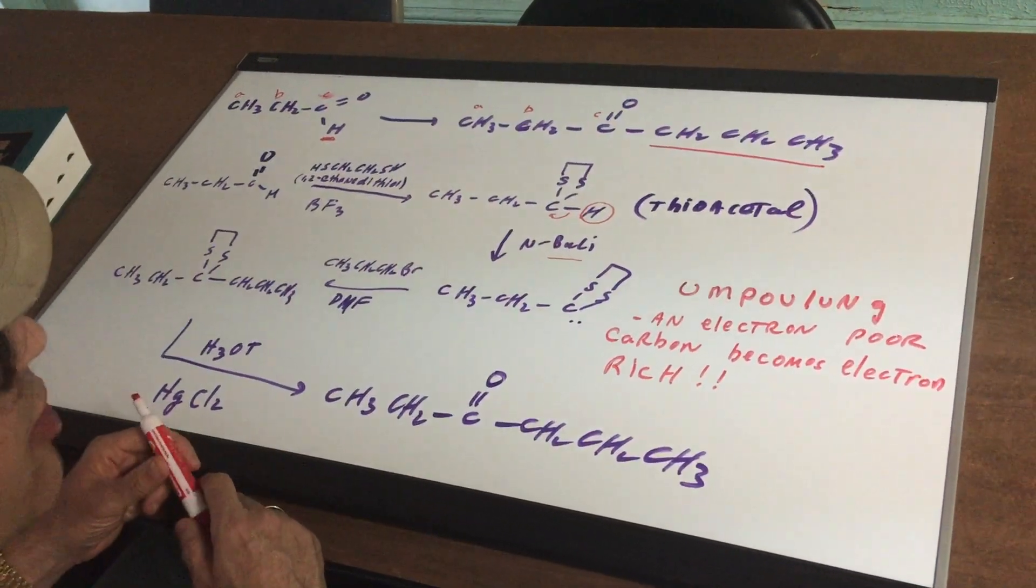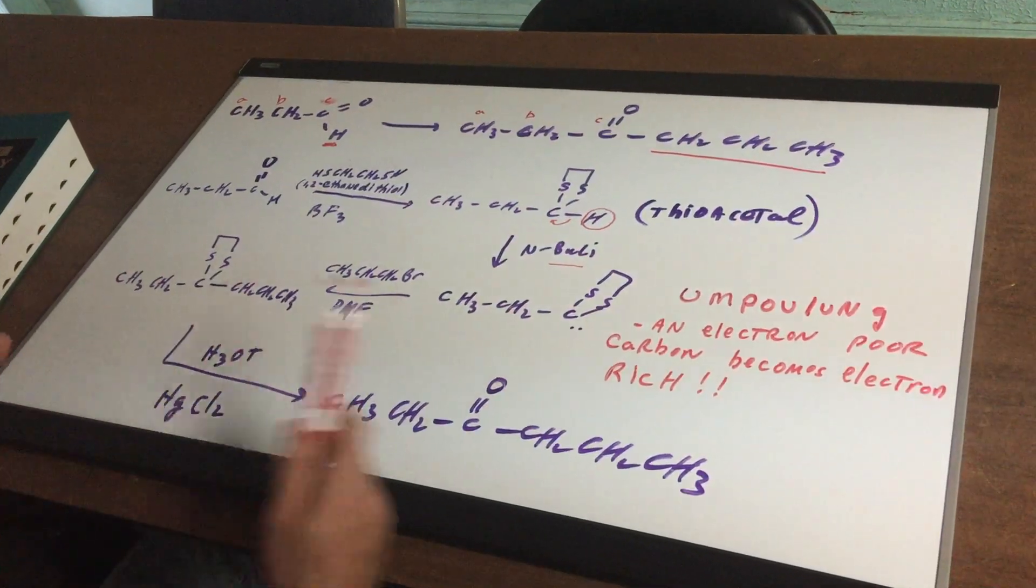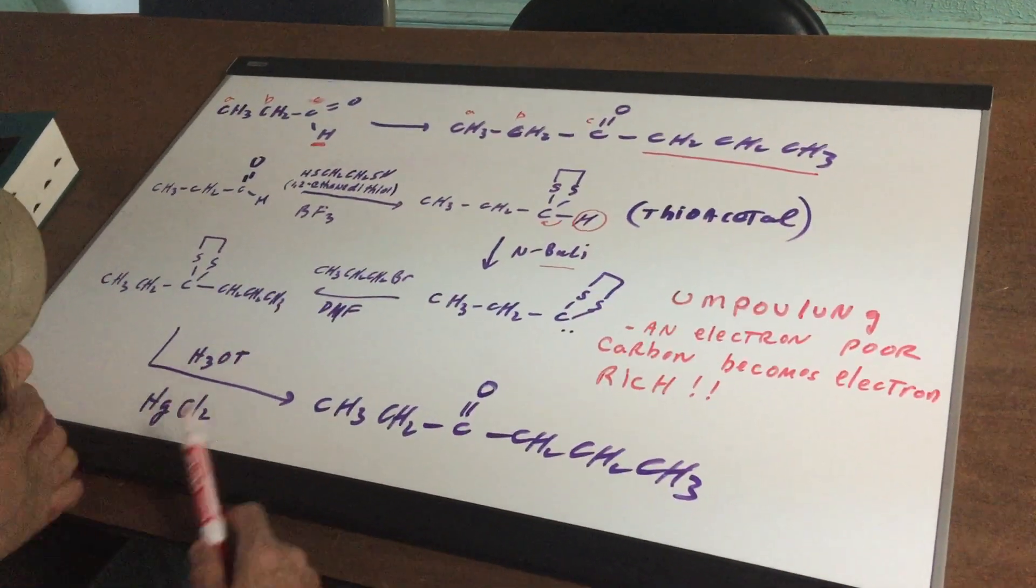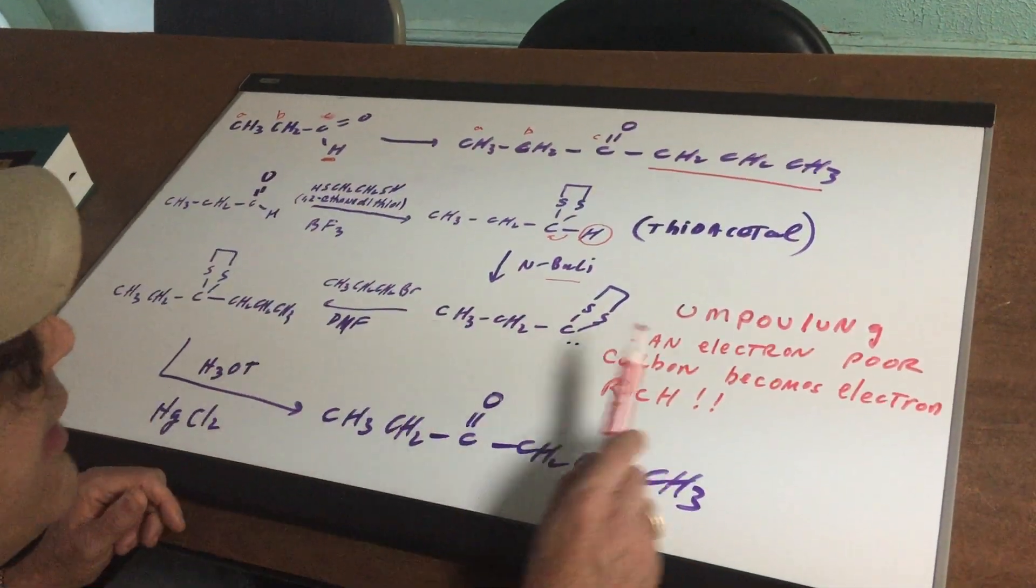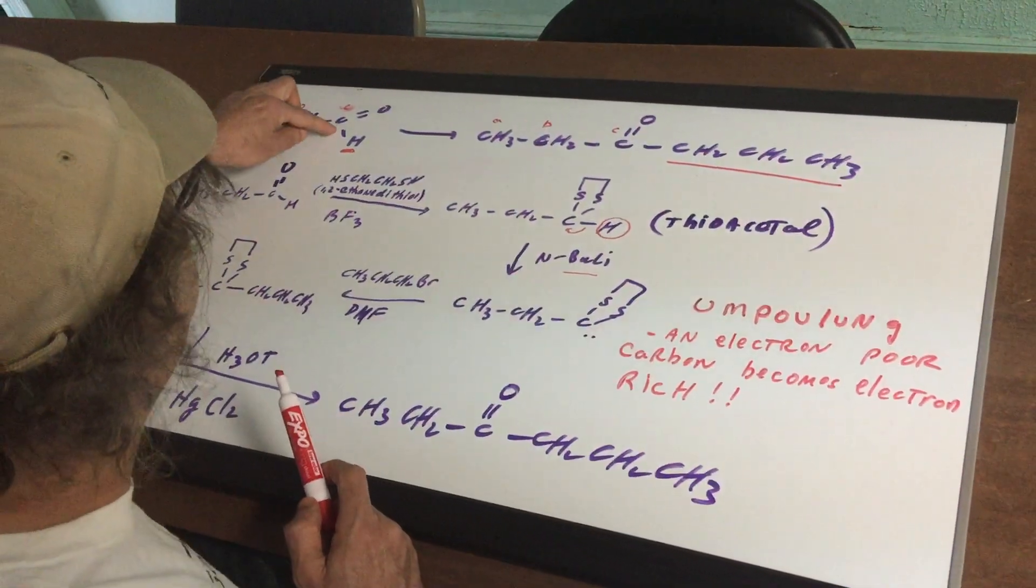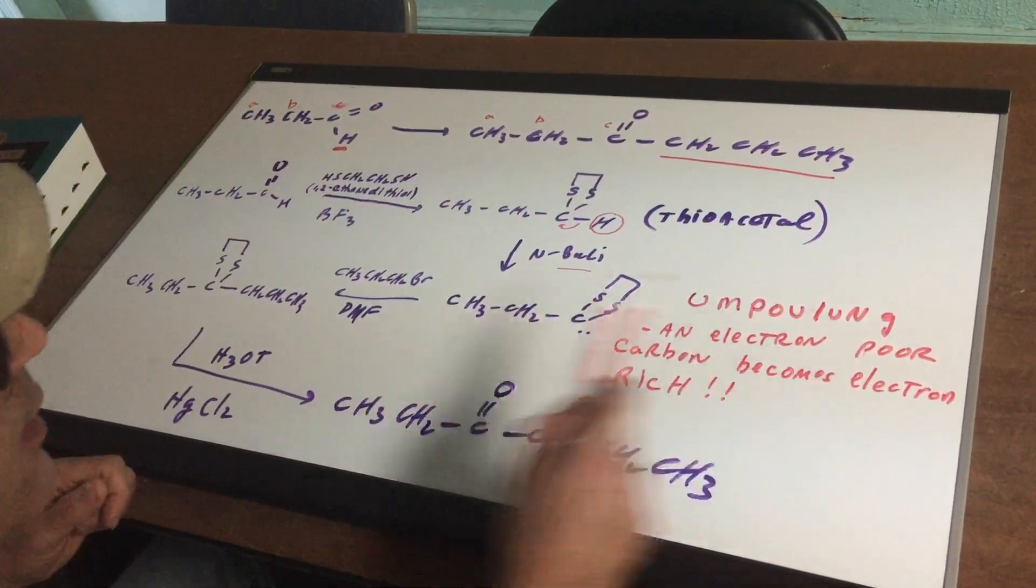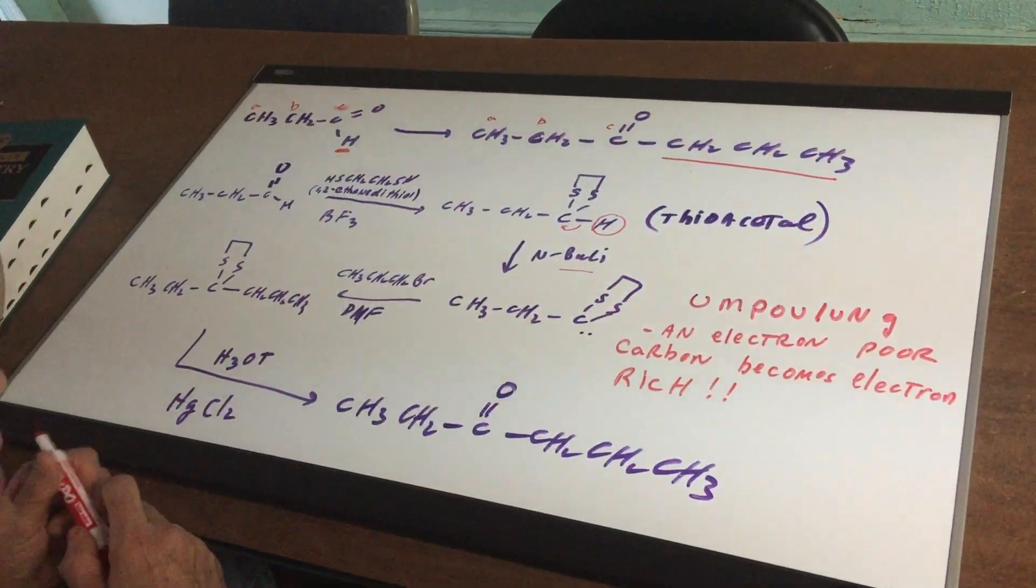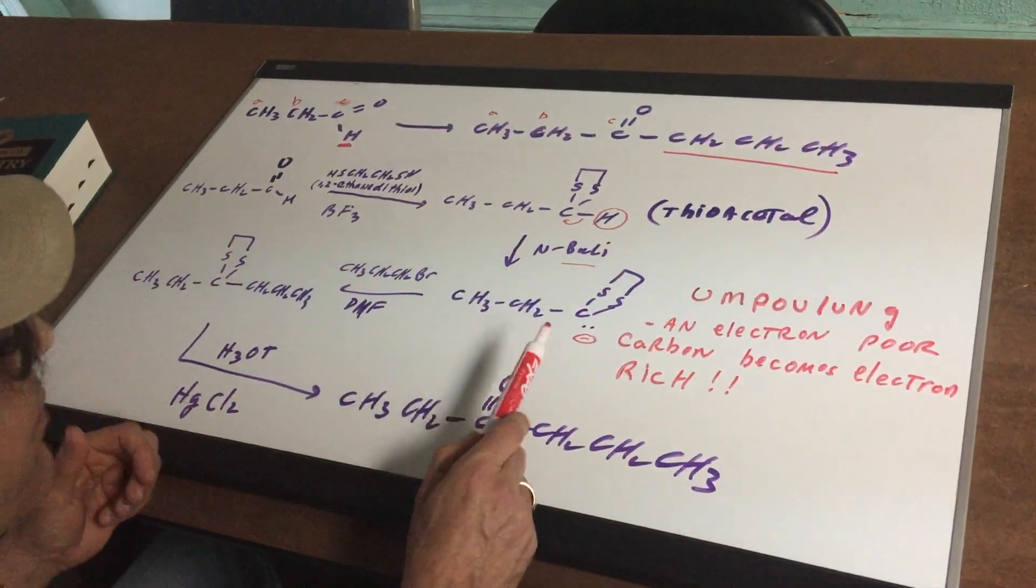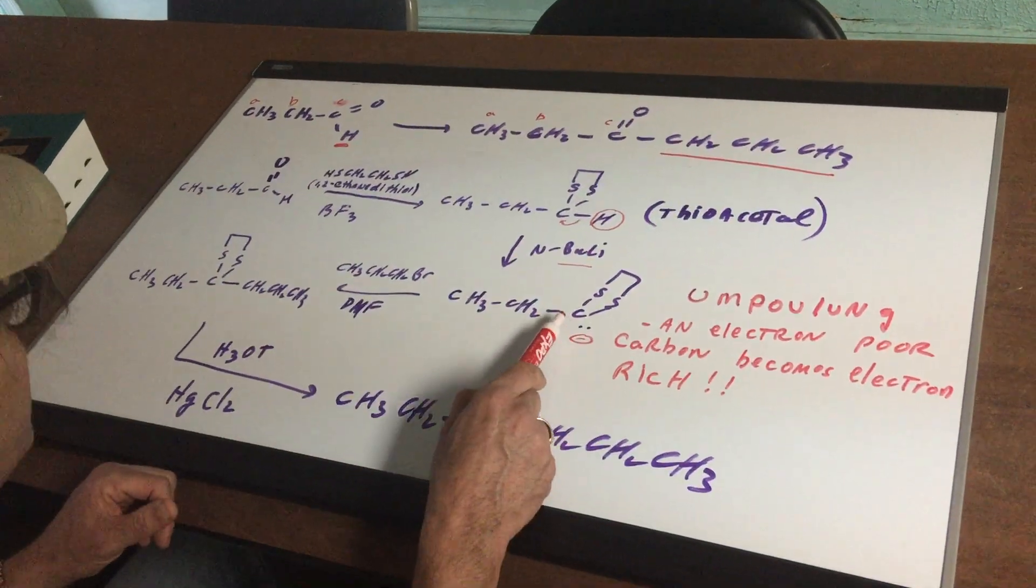What I've just accomplished is known as an umpolung. Now that's a German word, and it's a word that when kids see it they're like what the hell does umpolung mean? It means that I reverse the polarity. In English, I mean that an electron-poor carbon, which was up here (this has got a double bond O attached so it's electron-poor), now becomes what? Electron-rich. So I've made a poor carbon which was electrophilic now become electron-rich and nucleophilic.